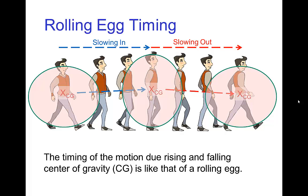Another way to understand that is to imagine an irregular wheel that isn't quite circular, so that it rolls kind of like an egg. As it rises it slows a bit, and then as the wheel rolls and the center of gravity drops back down, it speeds up again. This just adds some variation in the timing.